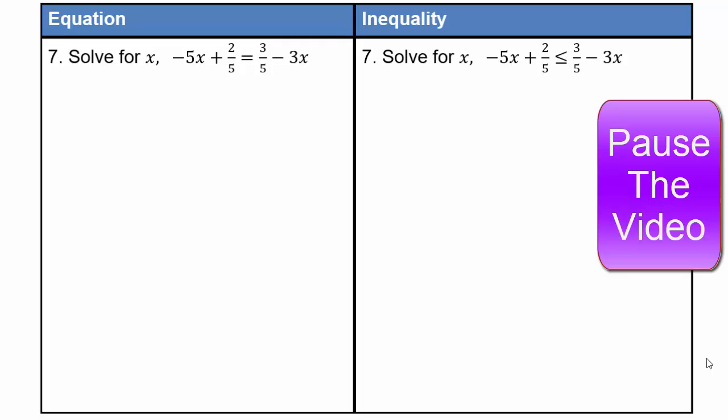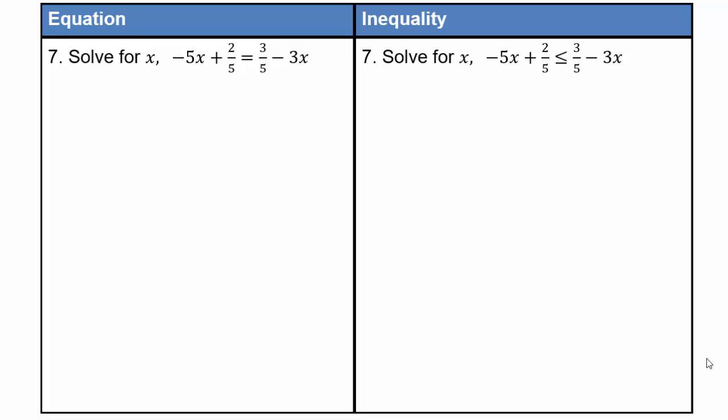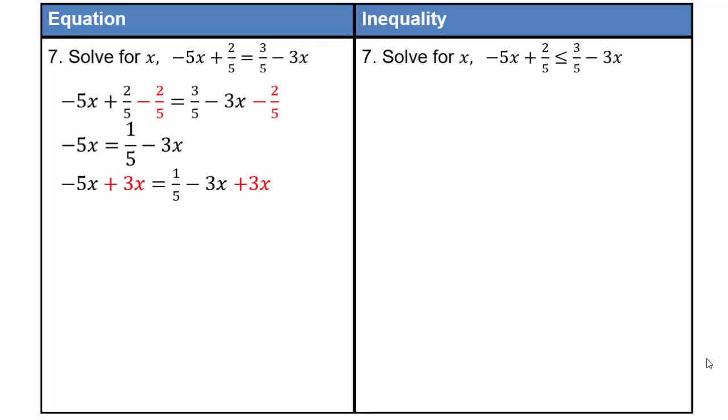Pause the video and solve for x. When we have fractions, you can multiply both sides by the common denominator or just add like terms as before. Assuming you've come back: subtract two-fifths, so three-fifths minus two-fifths gives one-fifth. Add three x, and we'll have negative two x equals one-fifth. Divide both sides by negative two, or multiply by negative one-half: negative one-half times one-fifth is negative one-tenth.